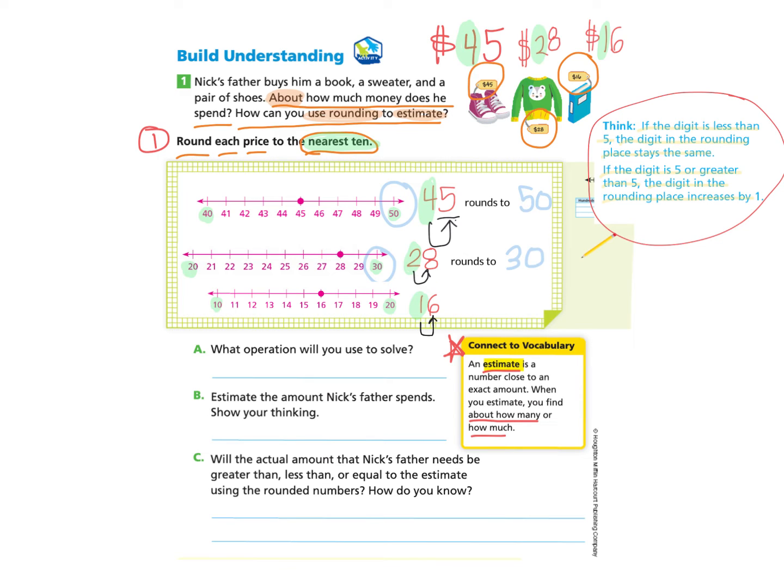And I see that 6 is greater than 5. So I know that I will be increasing my tens digit, which is the 1 by 1. So I will round to 20. So I can write 16 rounds to 20.